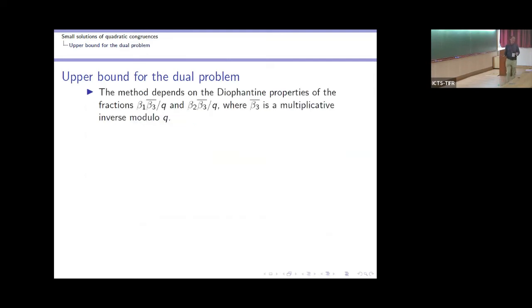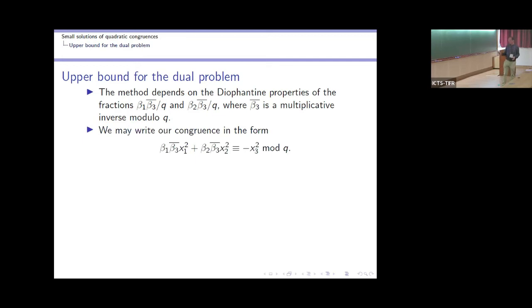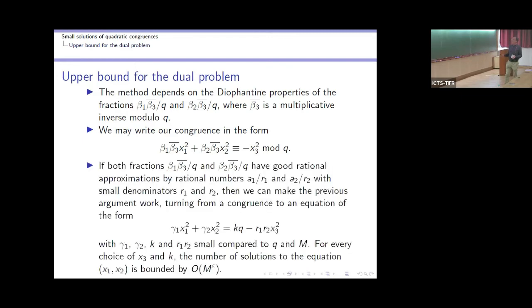The method is reminiscent of the division into minor and major arcs in the circle method. We rewrite the congruence by taking β₃ to the left-hand side and inverting. Our method depends on the Diophantine approximation properties of β₁β₃⁻¹/q and β₂β₃⁻¹/q. We divide into two cases: one where we can reduce to an equation, and another using reduction to linear exponential sums.